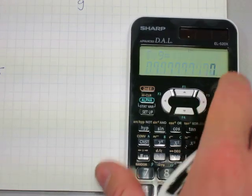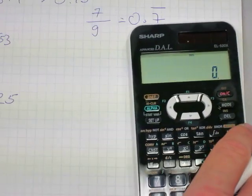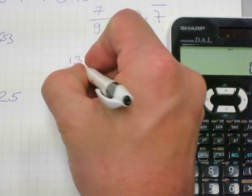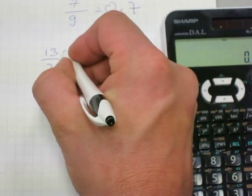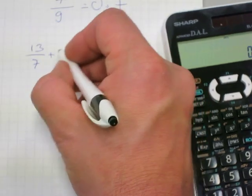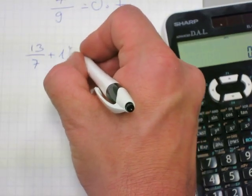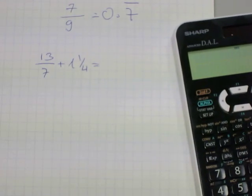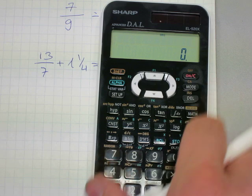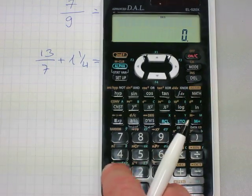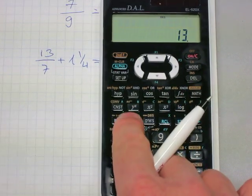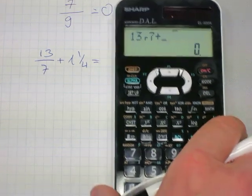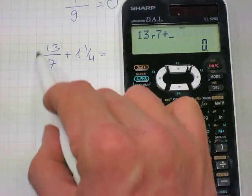And lastly I'll show you how to add 2 fractions with it. How about 13 sevenths, improper fraction, plus 1 and 1 quarter, a mixed number. Let's add an improper fraction and a mixed number on this calculator. This is how the situation works. 13 ABC button, 7 plus. So far I entered 13 sevenths.